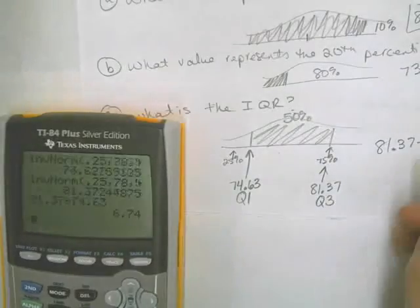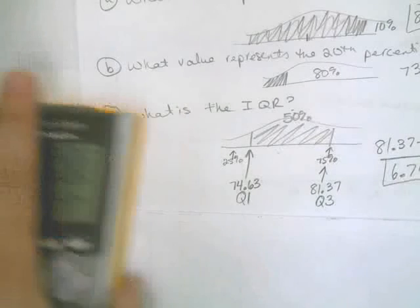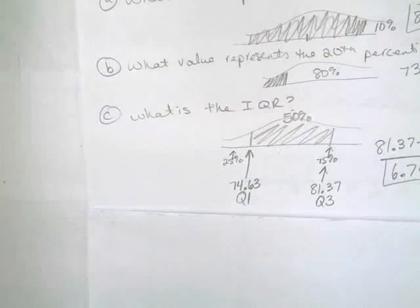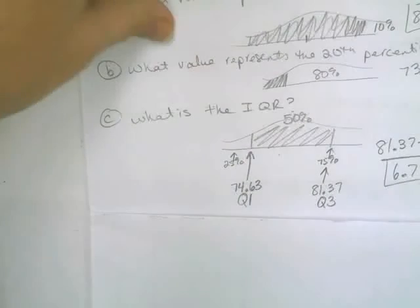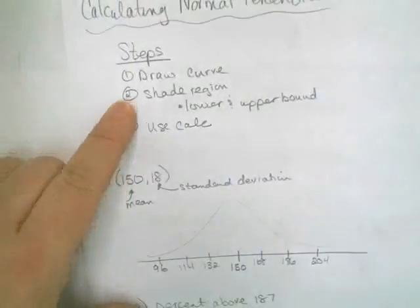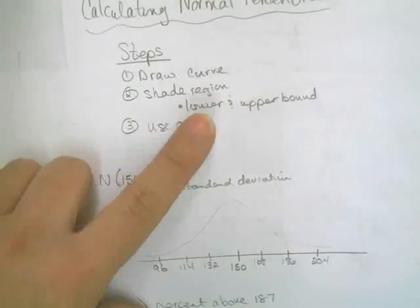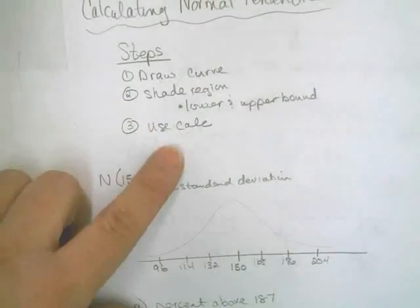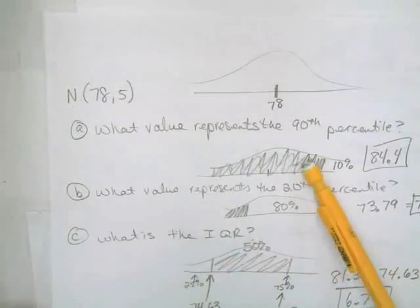When doing any of these problems, the steps that make it easier are: draw the curve, shade the region, figure out the lower and upper bounds, and then use the calculator. If you're going backwards — given a percentile, finding a value — once you have the shaded region, use Inverse Norm. Make sure you come to class if you have any questions.